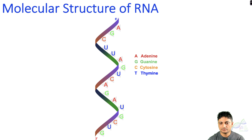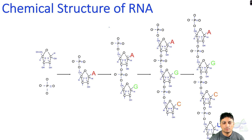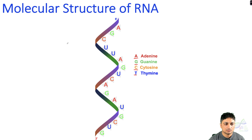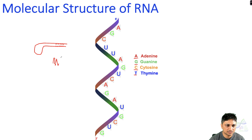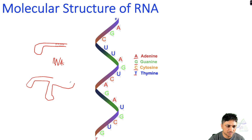RNA is a single-stranded molecule with four different types of nucleotides: adenine, guanine, cytosine, and uracil. However, like DNA, sometimes it can form a double helical structure and form a hairpin loop — different bases within the strand can hybridize to each other to form a double-stranded RNA molecule. Ribosomal RNA is one good example of double-stranded RNA, and tRNA also forms a double-stranded molecule with a hairpin loop structure. Usually RNA is single-stranded, but under some special conditions it can form a double-stranded molecule.